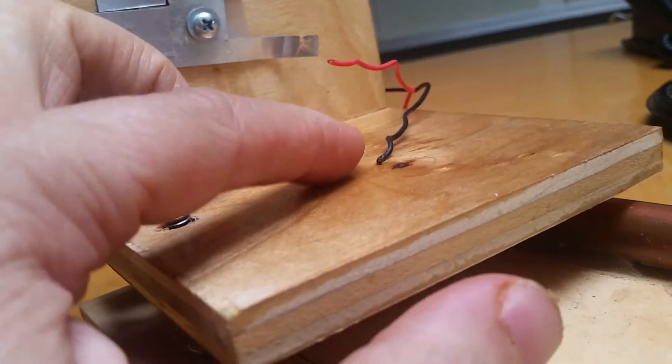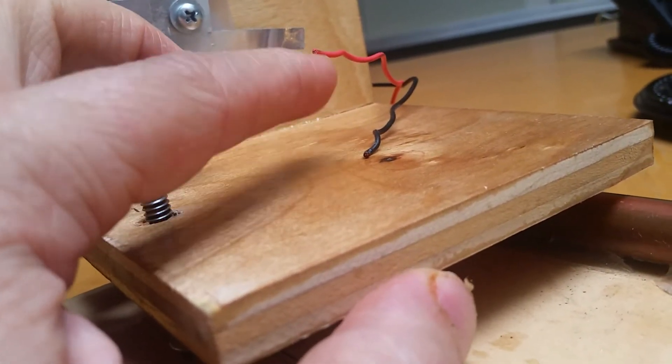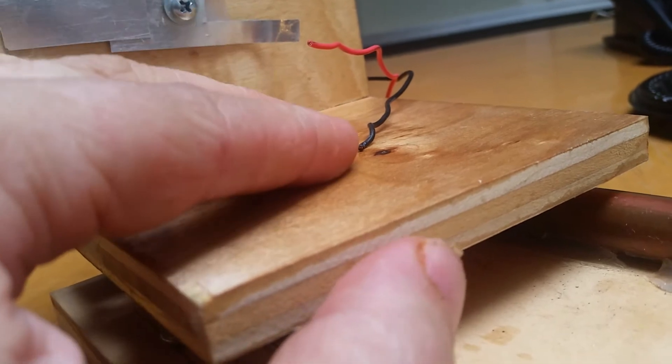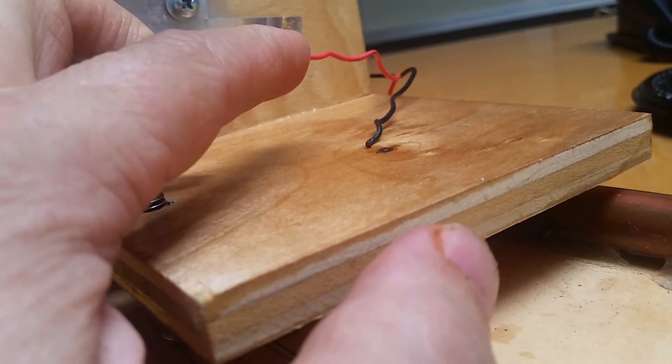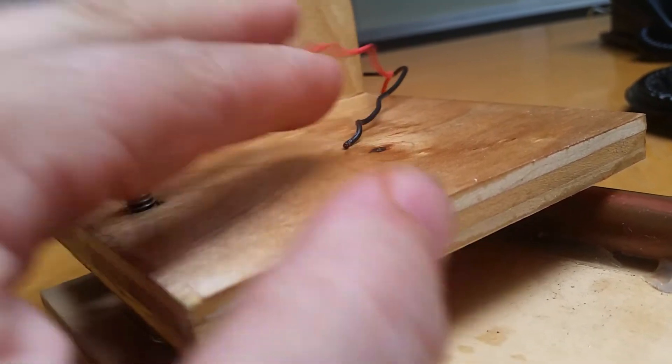You need to get a 2 double A or a 2 triple A battery holder and then positive negative solder it onto it.